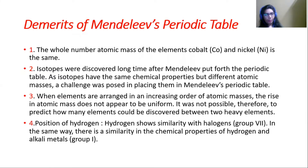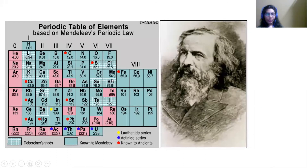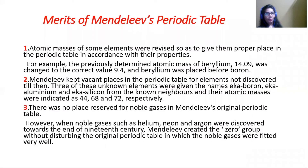The first drawback: the whole number atomic mass of elements cobalt and nickel is the same. Cobalt and nickel have the same atomic mass, that is 58. But if you observe, nickel's atomic mass is actually less than cobalt's, so nickel should come at the place of cobalt. This was one drawback of Mendeleev's periodic table.